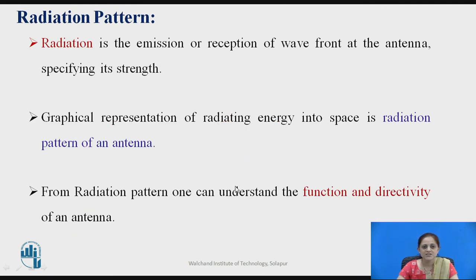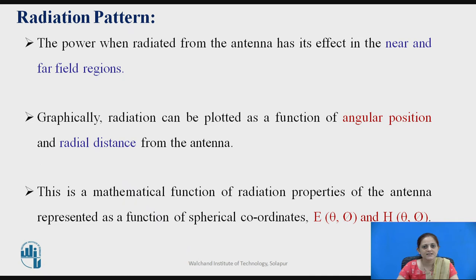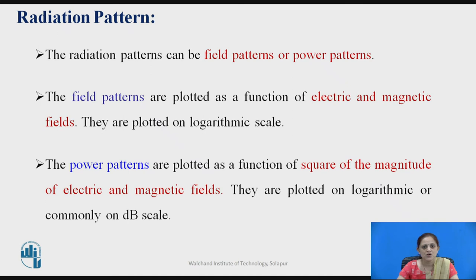Radiation is the emission or reception of a wavefront at the antenna, specifying its strength. The graphical representation of radiating energy into free space is denoted the radiation pattern, from which you can define the function and directivity of an antenna. The power radiated from an antenna has its effect in the near and far field regions, and is represented graphically with respect to angular position and radial distance. The mathematical function of radiation properties is expressed in the spherical coordinate system using electric field E and magnetic field H with angles theta and phi. The radiation pattern can be a field pattern or a power pattern — the field pattern is a function of E and H, while the power pattern is the square of the magnitude of E and H.